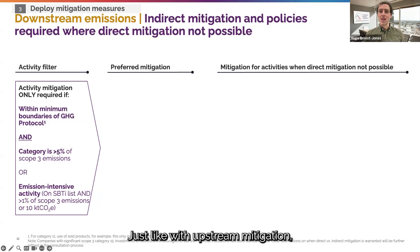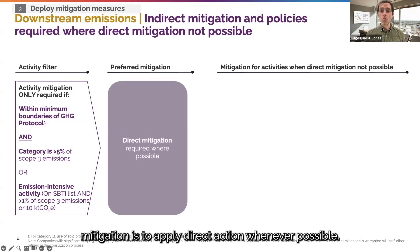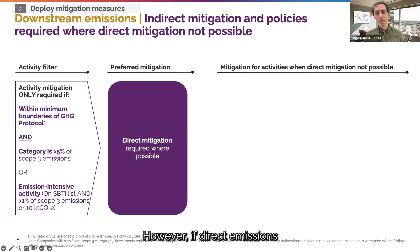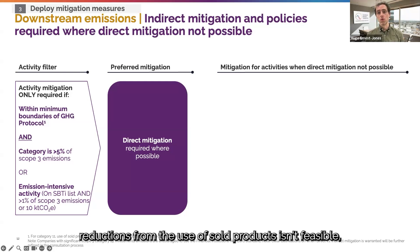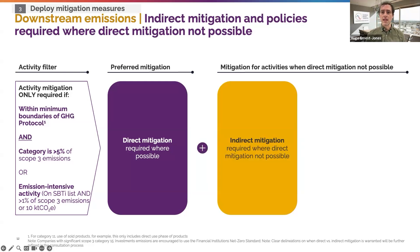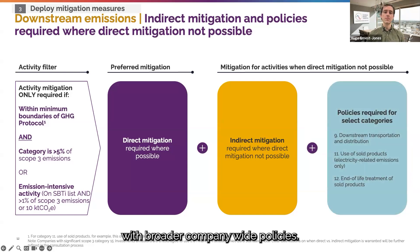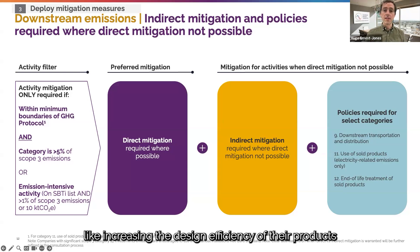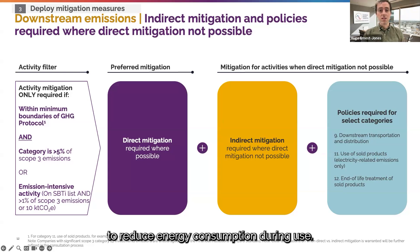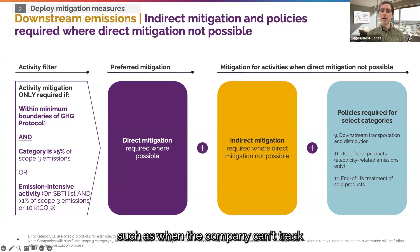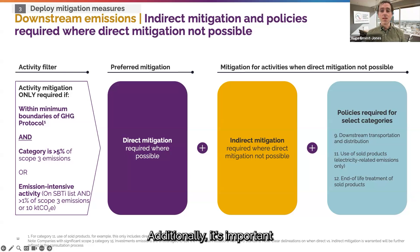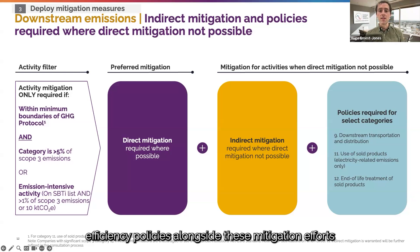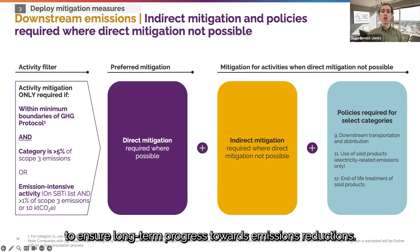Just like with upstream mitigation, the priority for downstream mitigation is to apply direct action whenever possible. However, if direct emissions reduction from the use of sold products isn't feasible, indirect mitigation may serve as an interim measure, especially when combined with broader company-wide policies. For a smartphone manufacturer, direct mitigation could include actions like increasing the design efficiency of their products to reduce energy consumption during use. However, if direct reductions aren't possible — such as when the company can't track which electricity grids the devices are being charged on — indirect mitigation may be used. It's important that companies implement broader efficiency policies alongside these mitigation efforts to ensure long-term progress towards emissions reductions.